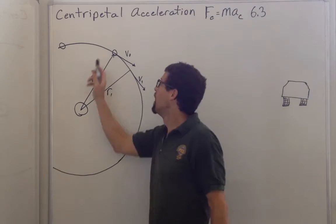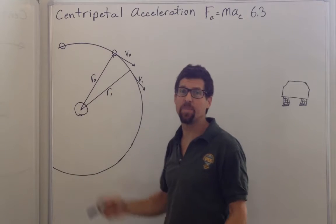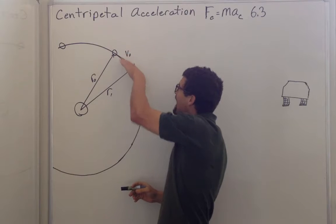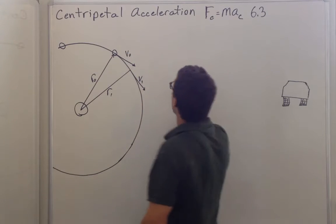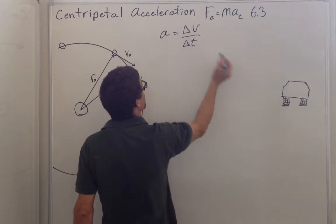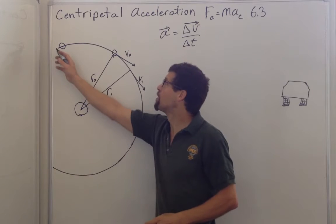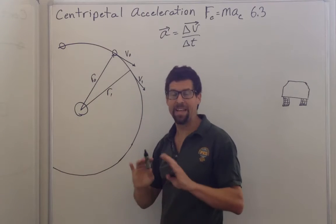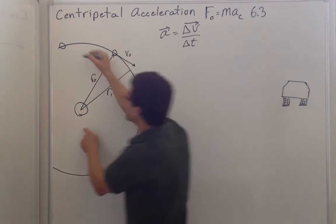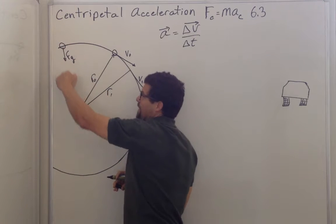Uniform circular motion: a body executes a circular path at constant speed. The speed is constant, but we know it's accelerating because the velocity changes direction. Acceleration is equal to the rate of change of velocity, but velocity is a vector. Looking at the moon executing a circular path around the earth at constant speed, there's a force of gravity between them, mutually attracting, so we know the moon must be accelerating in that direction.